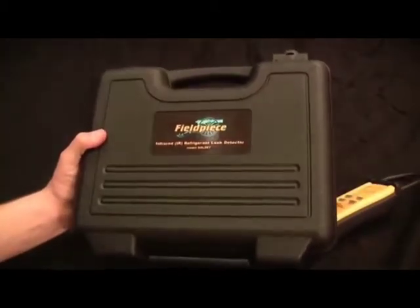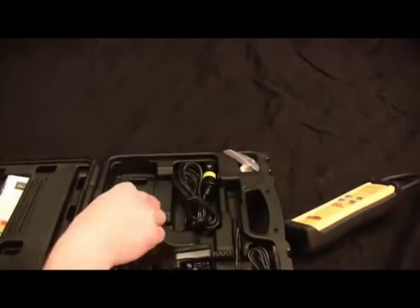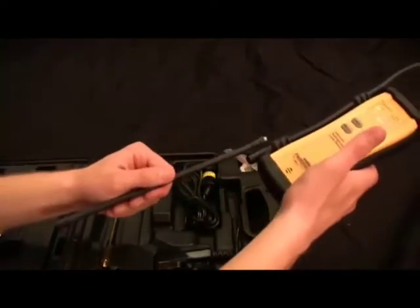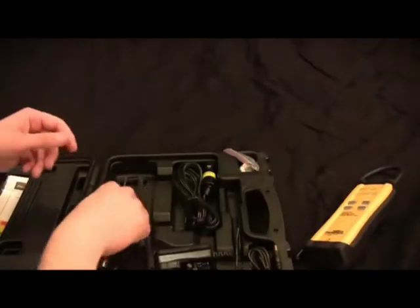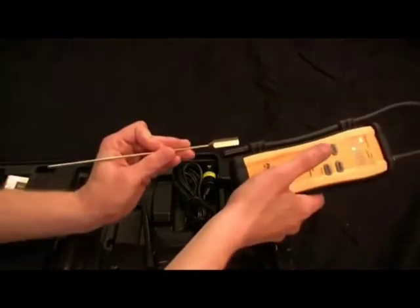So first, it comes in this nice blow-molded case. Look inside. We have an extension wand you can add to the tip of the SRL-2 just to give you a little bit of extra reach. We also have a needle nose tip that you can add to the tip of the wand just to get into condenser fins or tight spots.